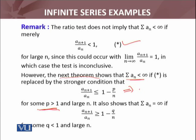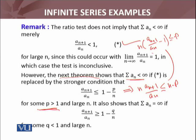If you multiply both sides by n, then n·a_{n+1}/a_n ≤ n - p. Furthermore, I can write this as n(a_{n+1}/a_n - 1) ≤ -p. So in the next theorem, you will see the limit of such type of thing which I have written here, for large n.